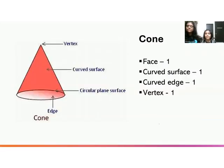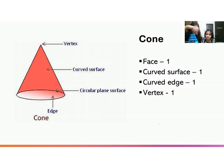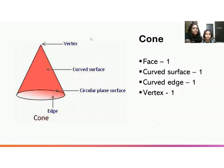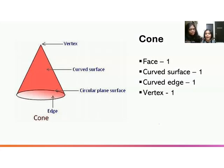What shape is this? It's a cone. Cone. How many faces are there in a cone? There is one curved surface and one flat face — one curved surface. And how many edges? There is one edge. And vertices? One vertex. As we can see in this picture, there is one vertex, one curved surface, one circular plane surface and one edge. Can you give us some examples of a cone? Ice cream cone and party hat. Correct — party hat and ice cream cone are both cone-shaped structures.